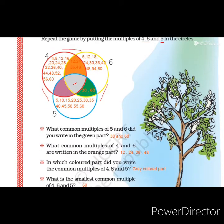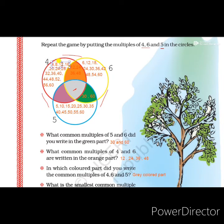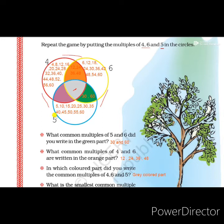The multiples of 4 — 4, 8, 12, 16, 20, 24 and up to 60 — are written in the red circle. Multiples of 5 — 5, 10, 15 and up to 60 — are written in the blue circle. Multiples of 6 — 6, 12, 18, 24, 30, 36, 40 and up to 60 — are written in the yellow circle.